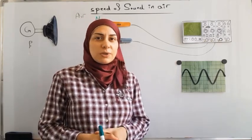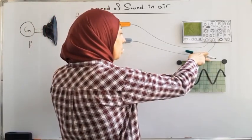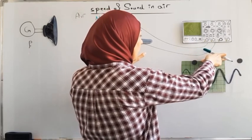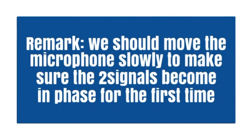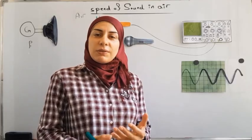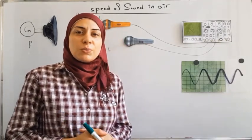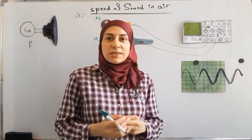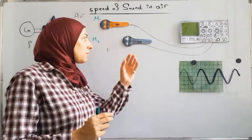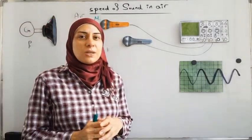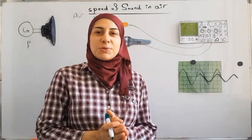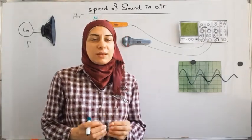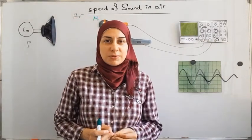As we remove microphone M2 away from the loudspeaker, we will observe two things on the screen of the oscilloscope. First, as we move this microphone, the two waveforms are no longer confounded and they are not in phase. We will continue moving the microphone until they become in phase again for the first time. Also, as we move microphone M2, the electric signal of microphone M2 will decrease in amplitude, because M2 is now further away from the loudspeaker, so the intensity of the sound wave decreases.